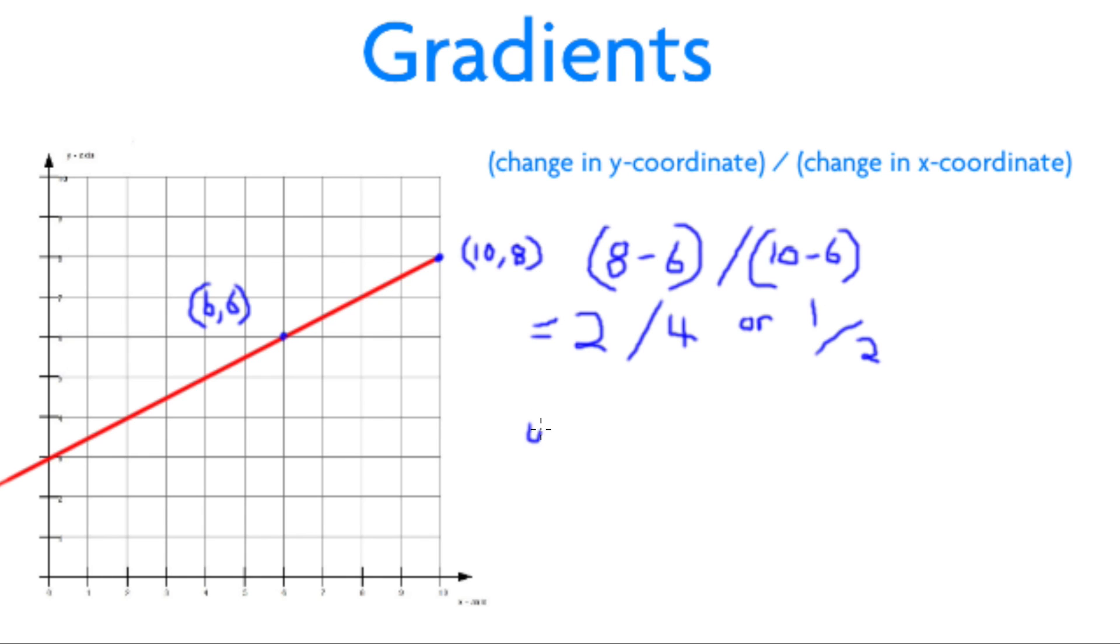Now we know this information, we can look to where the line in question crosses the y-axis. So, when y equals 3, the equation of the gradient is y equals half x plus 3.